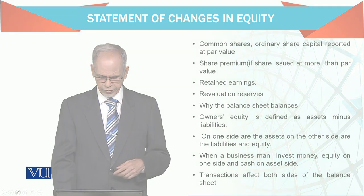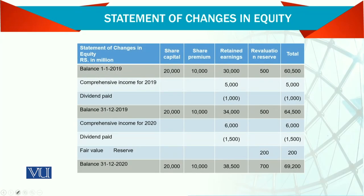We prepare this statement towards the end of the year, and anything you are adding or deducting balances the balance sheet — the transaction is on both sides. In the change of equity statement, as you can see, there is share capital, share premium, retained earnings, reserves, and a total. Starting from the opening balance, we need to give comparative figures — starting from, say, 1st January of year 19, then the income and dividend paid, then the closing balance.